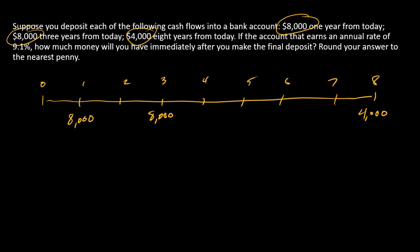In this problem, we are asked: how much money will we have in an account that deposits each of these cash flows after the final deposit, using a discount rate of 9.1 percent?